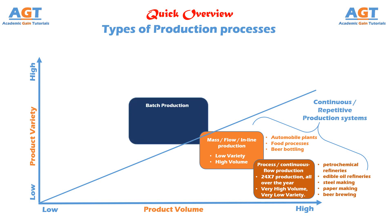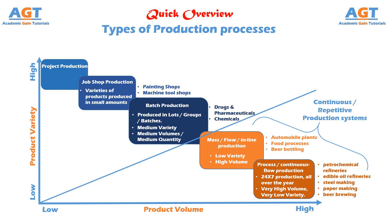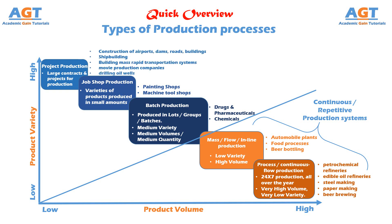After that, we discussed batch production, in which components or goods are produced in groups or batches, with products made in medium variety and medium quantity. Examples include production of drugs, pharmaceuticals, and chemicals. Then we studied job shop production, in which a small amount of a variety of products are produced — examples include painting shops and machine tool shops. Finally, we learned about project production, where a company accepts a single, complex, and large contract and must complete the order within a specified time interval. Examples include construction of airports, dams, roads, buildings, and shipbuilding. These three production processes fall under intermittent or non-continuous production processes.